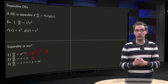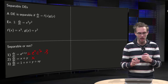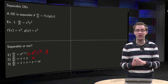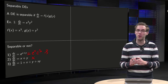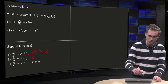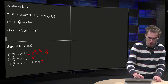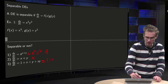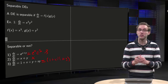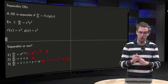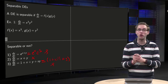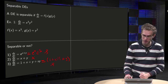Then we look at the third one. This one looks ugly: dy/dx equals 1 plus x plus y plus x times y — doesn't look that separable. But then you notice something nice: you can still separate this, because the right-hand side is in fact (1 + x)(1 + y). So yes, this third differential equation is also separable, but it is not so obvious at first sight.